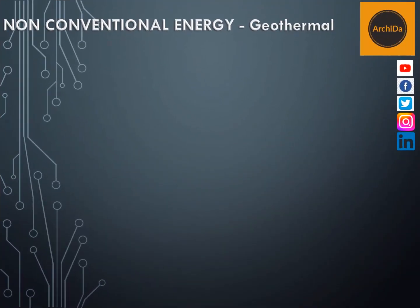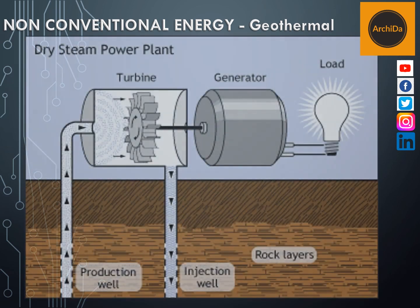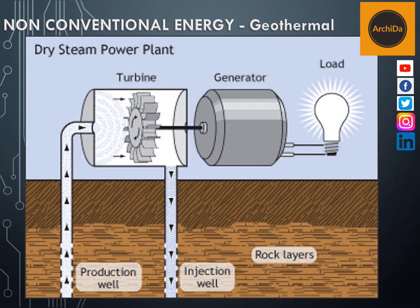One variation of a geothermal plant is called the dry steam power plant. This taps the actual steam from underground, which in turn runs the turbine and runs the generator, giving out electricity.